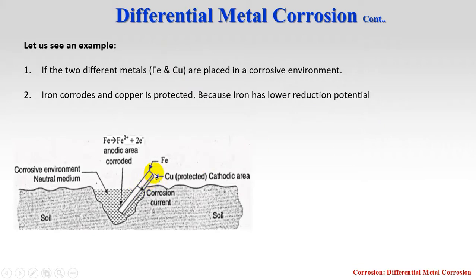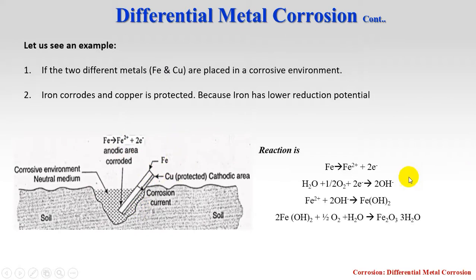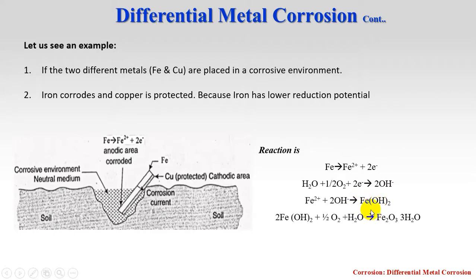As shown in the picture, iron and copper are placed in a corrosive environment — soil containing moisture. Iron has a lower E⁰ value, so it undergoes oxidation. The cathodic reaction involves water reacting with oxygen and two electrons to give OH⁻. Fe²⁺ then reacts with OH⁻ to form Fe(OH)₂, an insoluble precipitate, which further oxidizes in the presence of moisture to give Fe₂O₃·3H₂O, the corrosion product (rust).